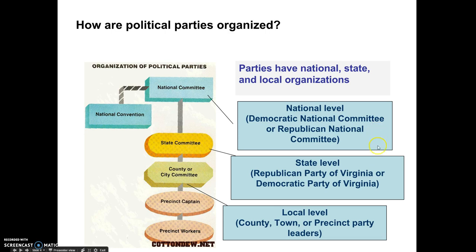Underneath that, each state has a state level party. So in Virginia, we have the Democratic Party of Virginia and the Republican Party of Virginia. Likewise, you see parties influencing and being involved at the local level — the Democratic Party of Charlottesville, for example, or another county, town, or even neighborhood or precinct level organization that is connected to that larger political party.